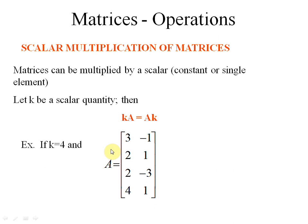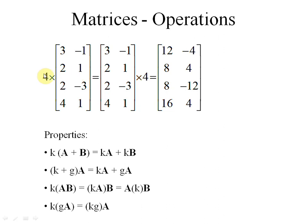Next, scalar multiplication of matrices. Scalar multiplication means multiplying any number k with a matrix. Matrices can be multiplied by a scalar constant or single element — any integer like plus 1, minus 1, plus 2, minus 2. If you multiply 2 with any matrix, it will multiply each entry of the matrix. Let k be the scalar. k multiplied with A equals A multiplied with k — for example, if k equals 4, then 4 multiplied with the whole matrix equals the matrix multiplied with 4, and the answer is the same.